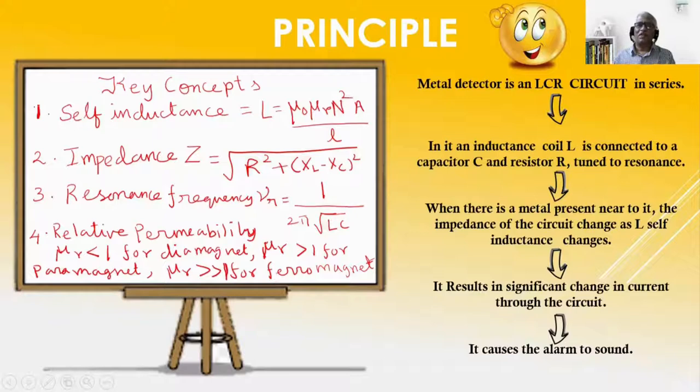When metallic body is brought near it or brought through the metal detector, what happens? The self inductance of the coil L changes as relative permeability μr changes. As μr changes, L changes. Since L changes, the frequency also changes from resonance frequency. Whenever the frequency increases above or decreases below resonance frequency, impedance of the circuit increases.